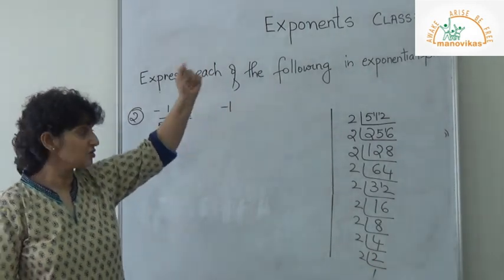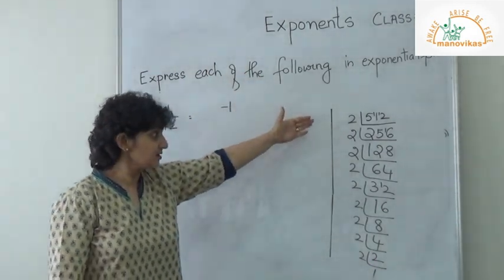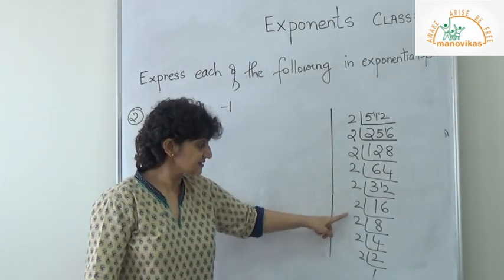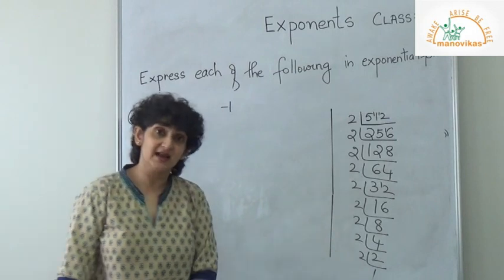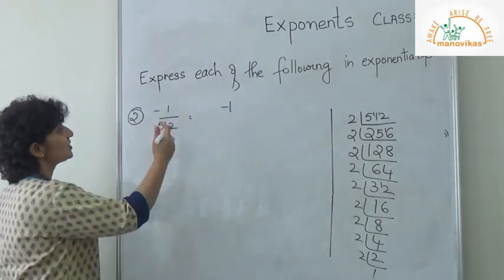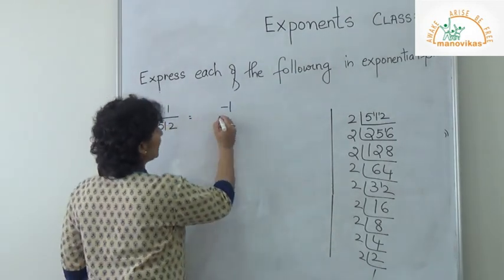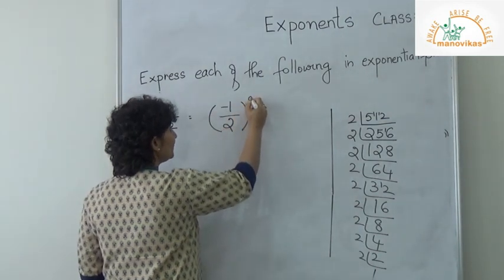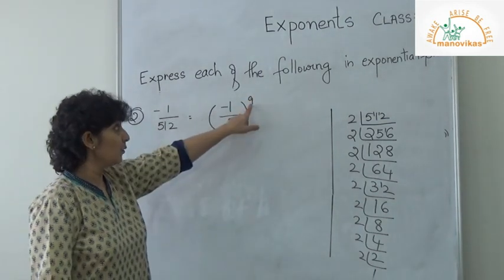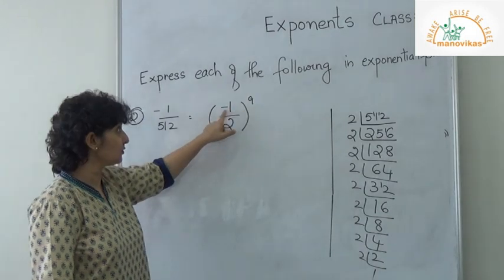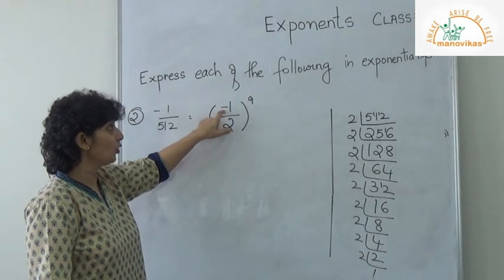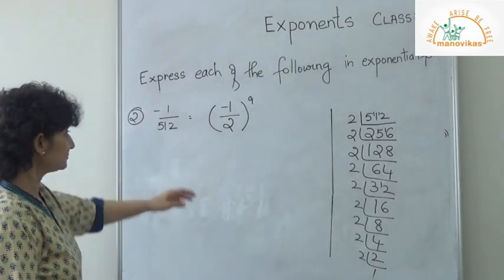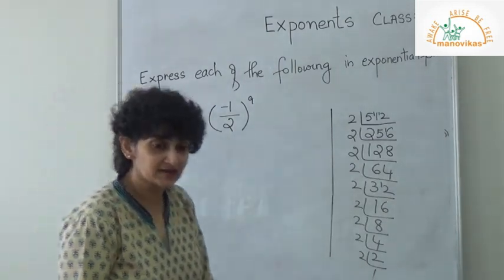Now count how many 2s we have: 1, 2, 3, 4, 5, 6, 7, 8, 9. We have 9 twos. So the answer is minus 1 upon 2 to the power 9. And when the exponent is odd, the sign is also negative.